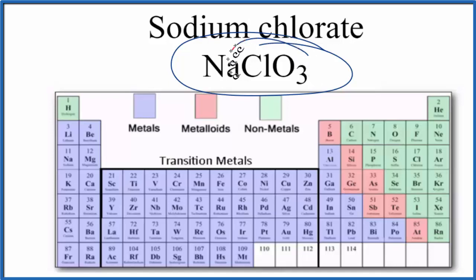But within the compound, we have the chlorate ion. The bonds between the chlorine atom and the oxygen are covalent.